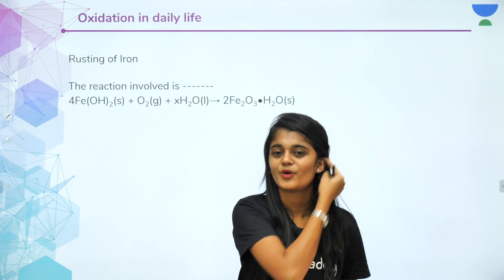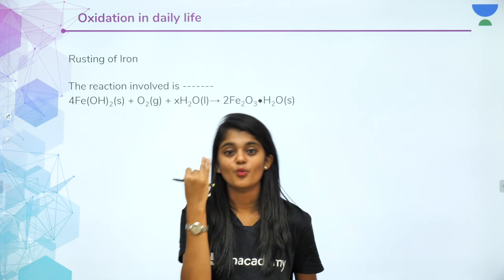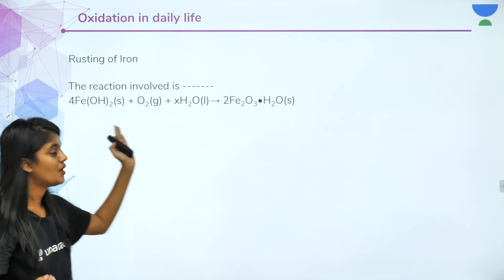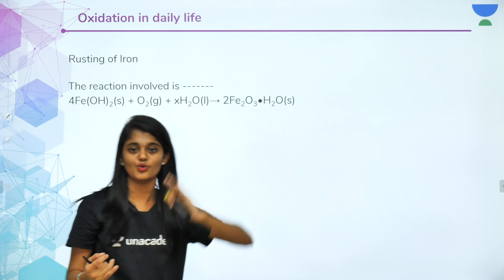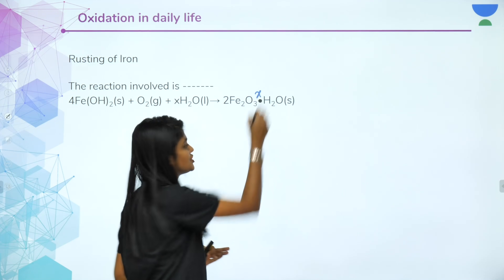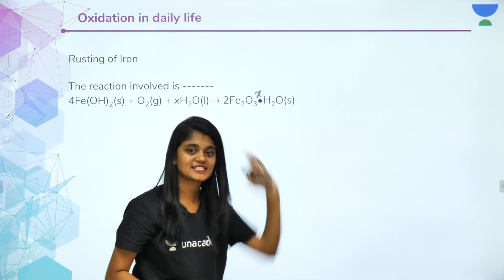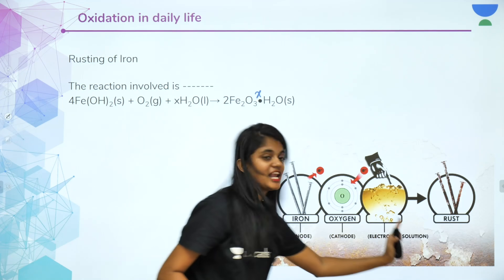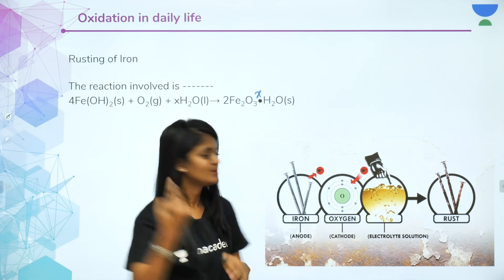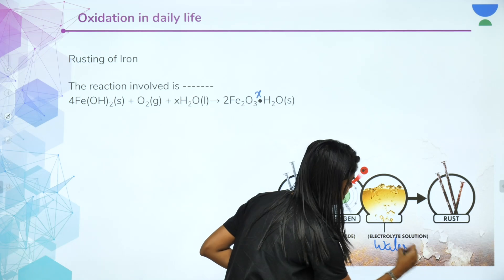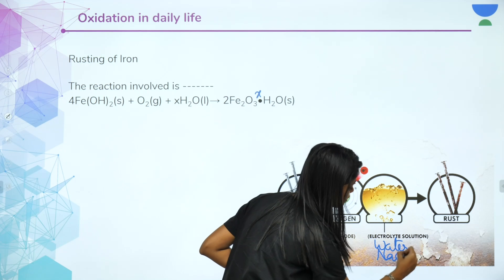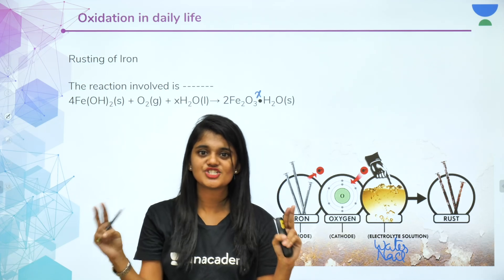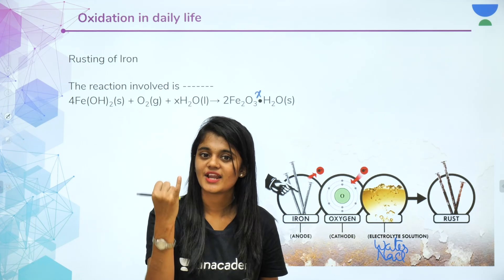For rusting, two things are very important: oxygen and water. The reaction is: Fe + O2 + electrolytic solution (water, NaCl) → Fe2O3·xH2O (rust). So the essential components for rusting are oxygen and water. How do you prevent rusting? The first method is greasing or oiling — for example, oiling the chain of a cycle. This creates a protective layer that prevents direct exposure to oxygen, reducing friction and oxidation.